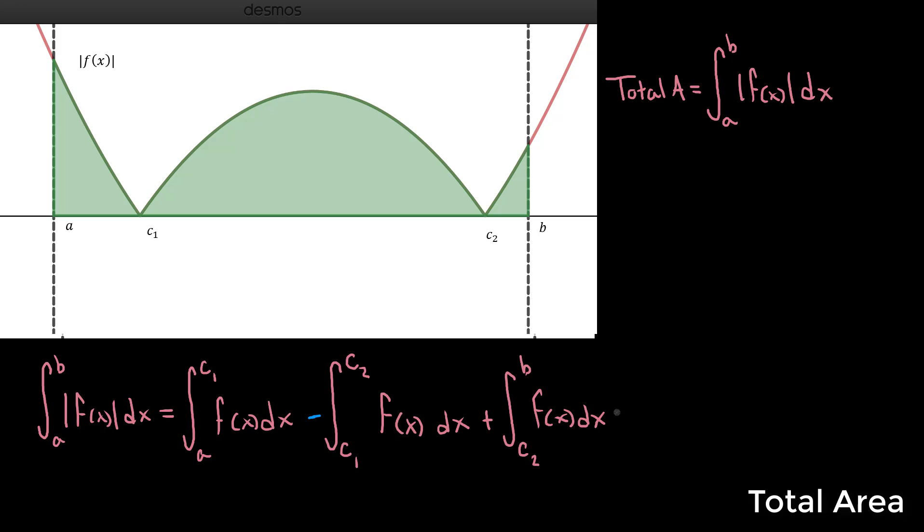And now all we got to do is tack on our computations from earlier. We saw that that first region from a to c1, well that was 3. Next, we're going to be subtracting the area that we got or the definite integral from c1 to c2. We observed that it would be negative 7.